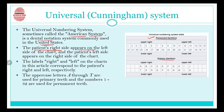Always remember that the patient's right appears on the left side of the chart. So if this is the chart for permanent dentition in the Universal system, the left area of the chart is actually the patient's right side. Conversely, the patient's left side appears on the right side of the chart. The labels 'right' and 'left' on the charts correspond to the patient's sides, not the viewer's perspective.